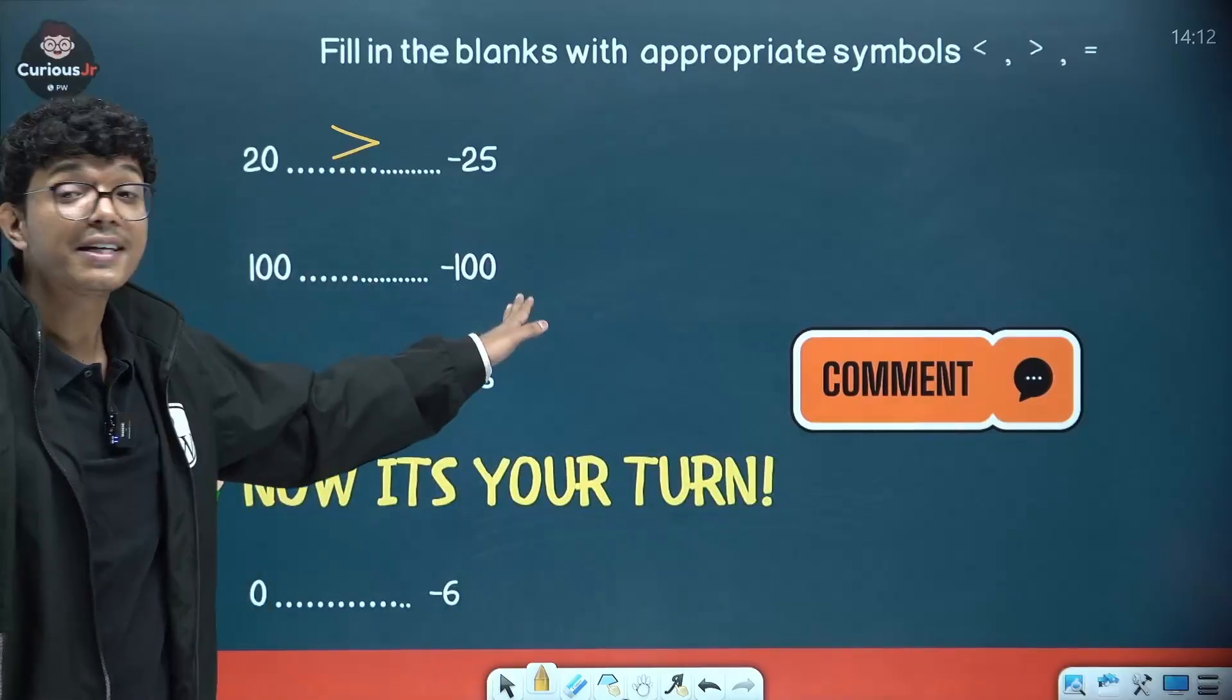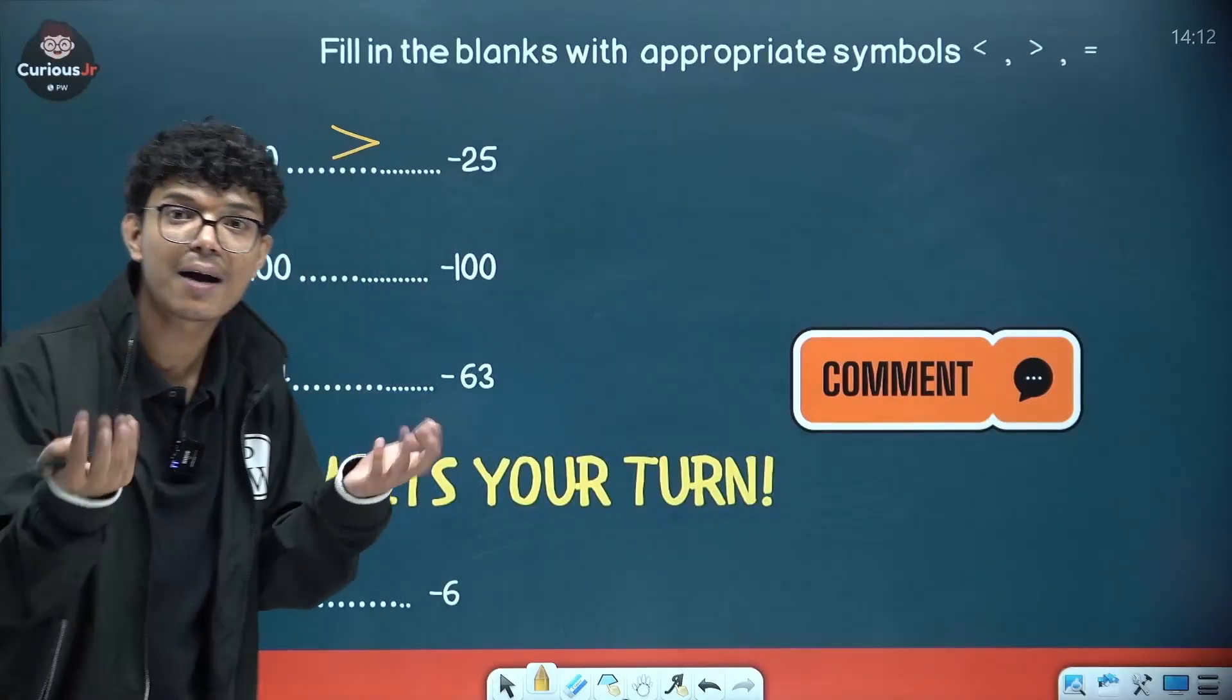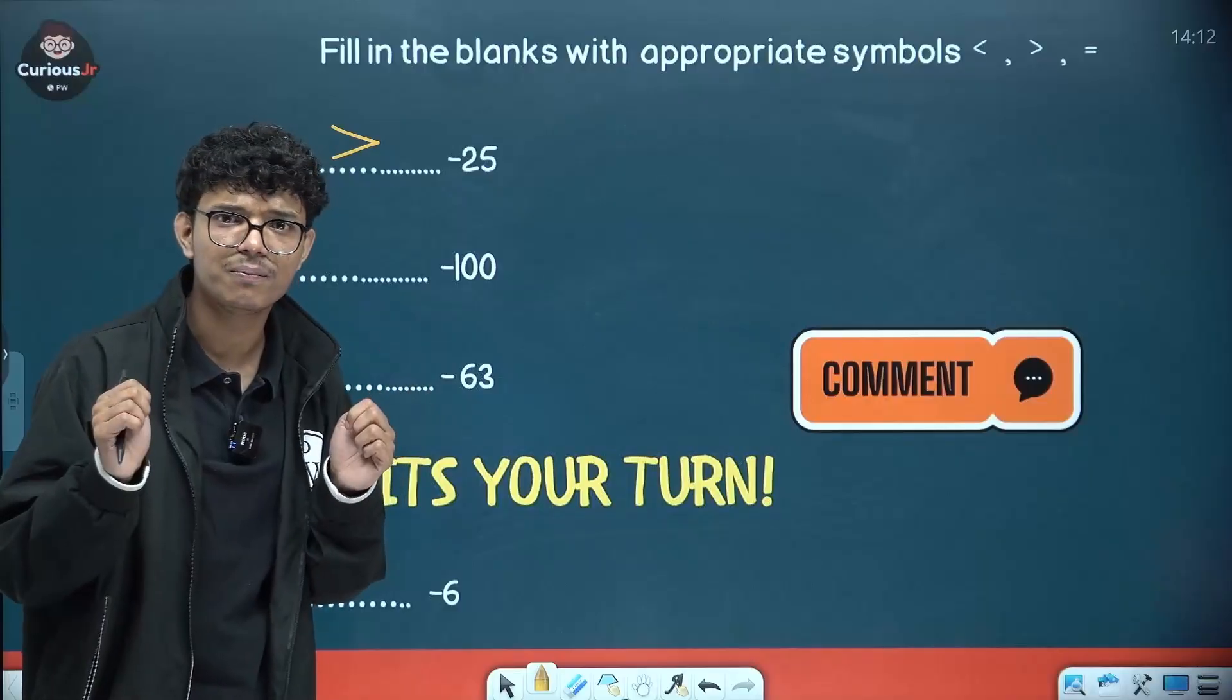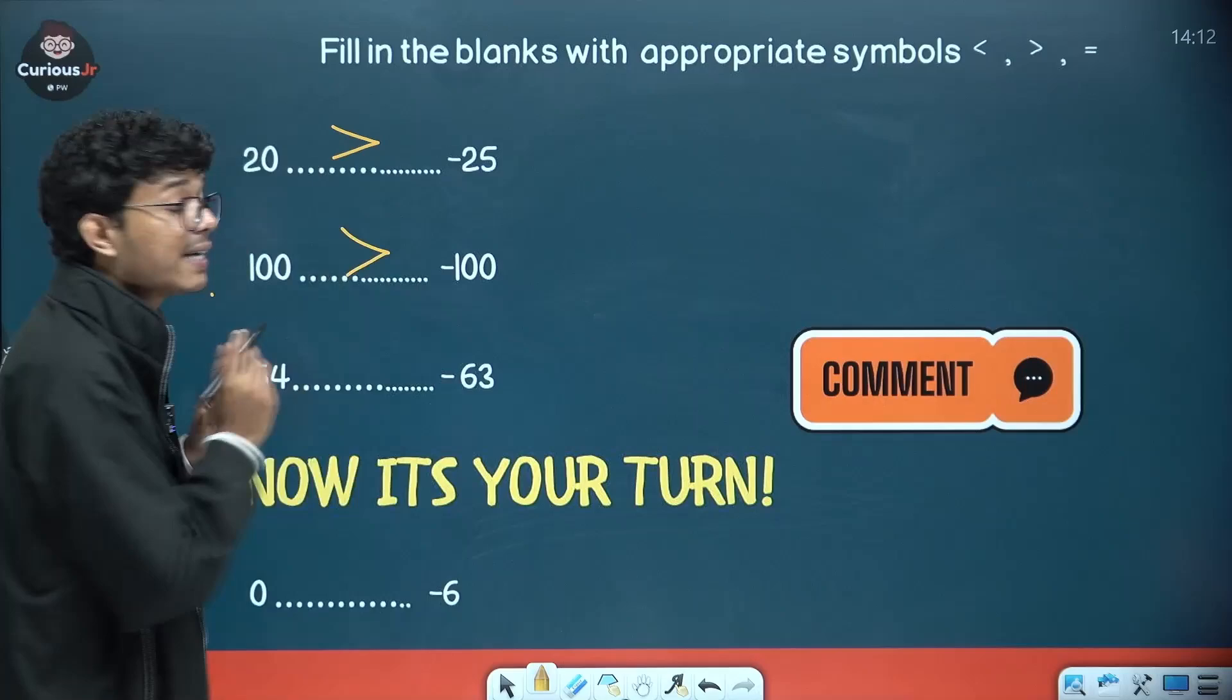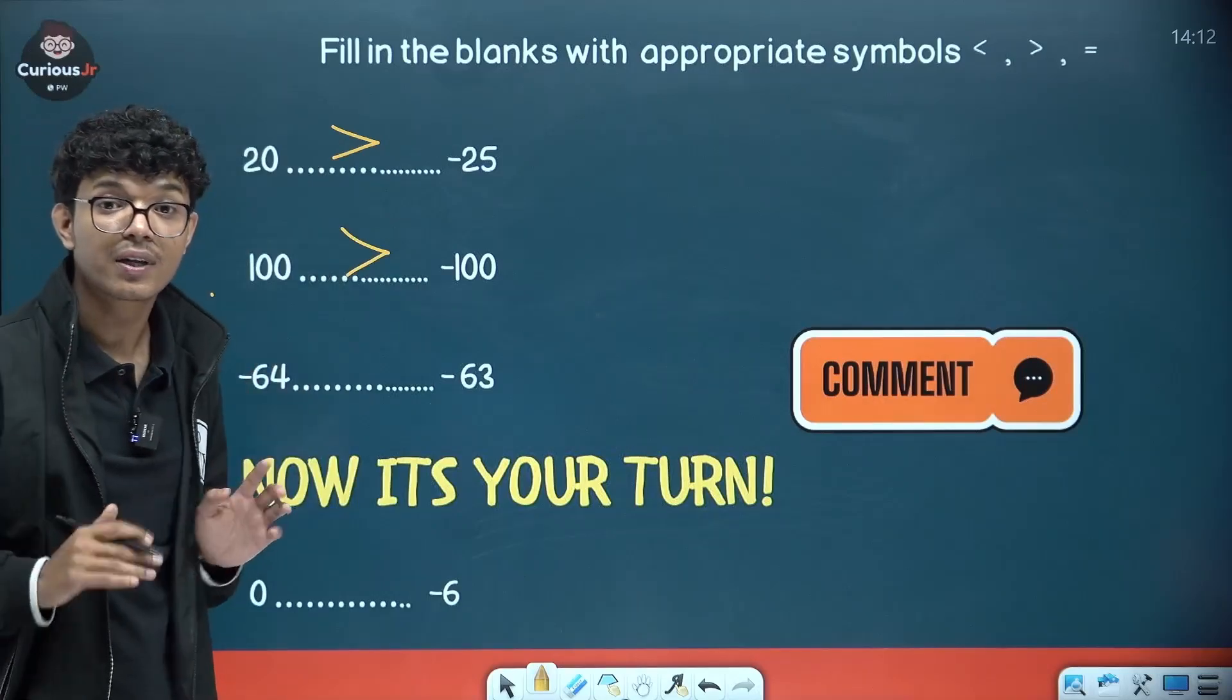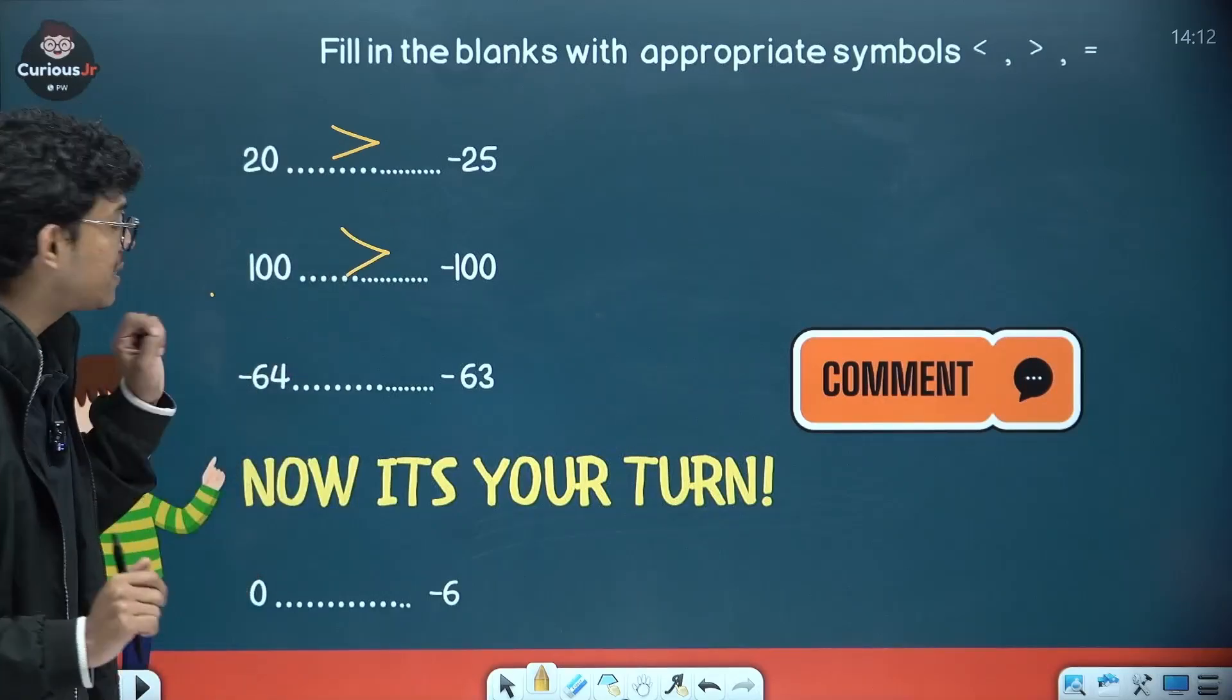So 20 is greater than minus 25. 100 and minus 100, how do we compare? Again very simple. Why? Positive and negative. Positive numbers are always greater than the negative numbers.